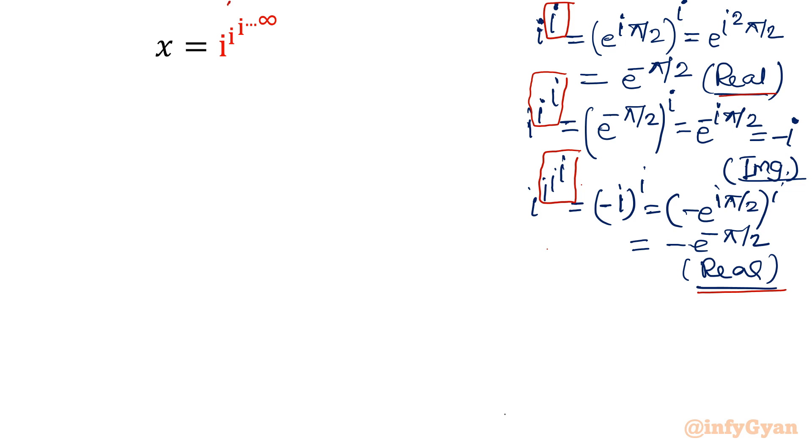What I am going to do: I will consider this power as x again. So equation will be x equal to i raised to the power x. Now take natural log both sides. ln x would be equal to x ln i.